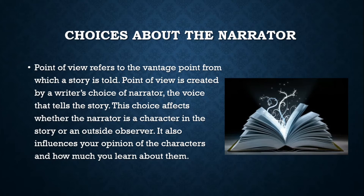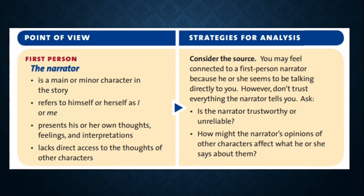The first one is the first person. A first person narrator is a main or minor character in the story. They refer to themselves as 'I' or 'me,' and present their own thoughts, feelings, and interpretations. However, this narrator lacks direct access to the thoughts of other characters.